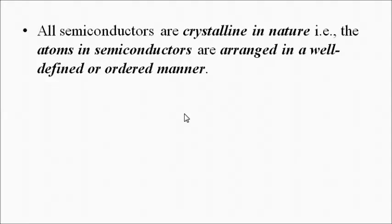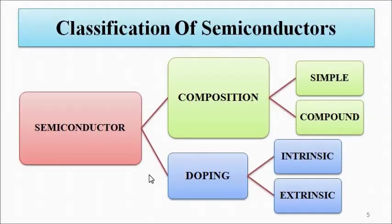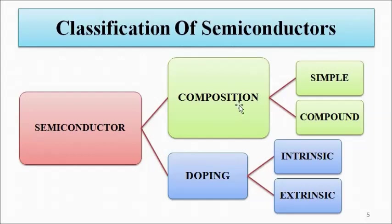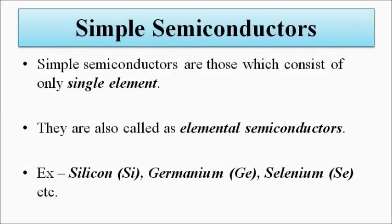Various temperature sensors, especially those based on semiconductors such as thermistors, are fabricated using this property. Another important property is that all semiconductors are crystalline in nature, meaning all the atoms in the semiconductor are arranged in a well-defined, ordered manner with a proper geometry. Now, we can classify semiconductors in two ways: one on the basis of composition, and another in terms of doping or addition of impurity.